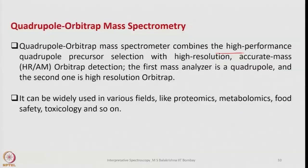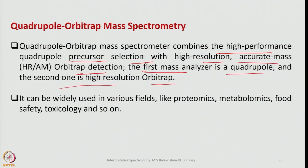The quadrupole orbit trap mass spectrometer combines high-performance quadrupole precursor selection with high-resolution accurate mass orbit trap detection. The first mass analyzer is a quadrupole and the second is a high-resolution orbit trap. It can be widely used in various fields like proteomics, metabolomics, food safety, and toxicology — specially designed for very specific purposes. These instruments may not be needed for routine examination of molecules generated in chemistry laboratories.